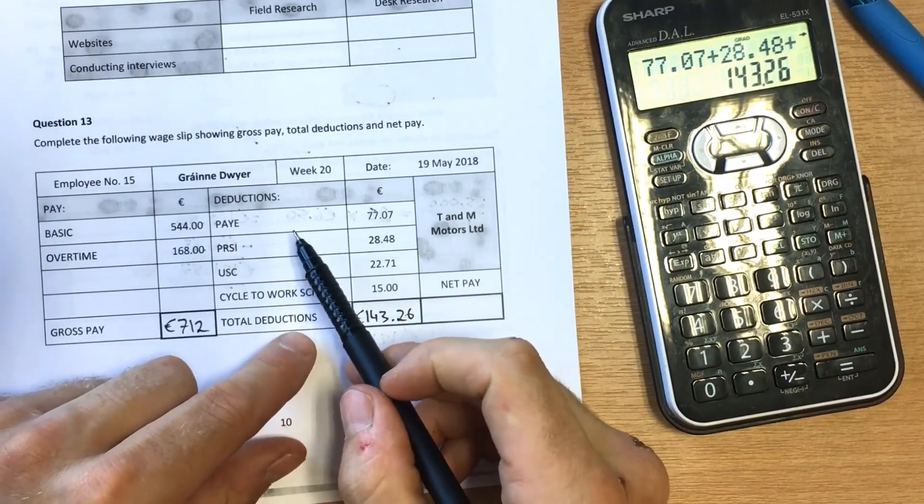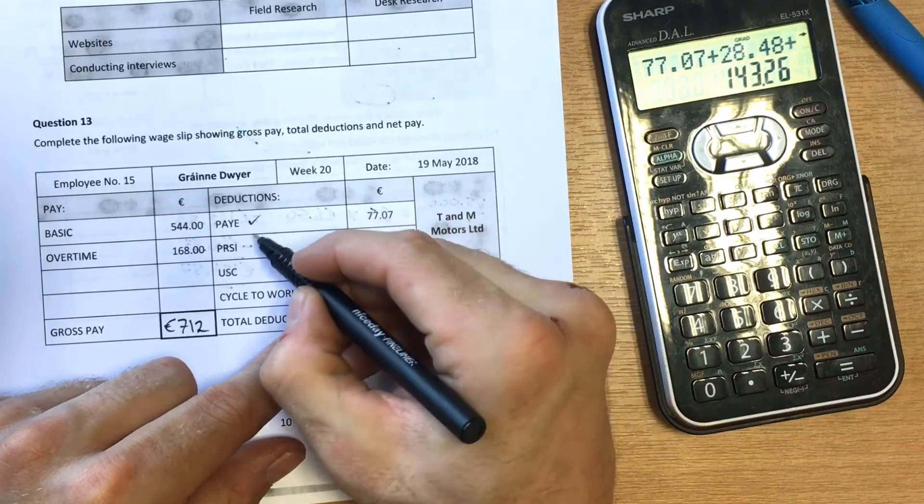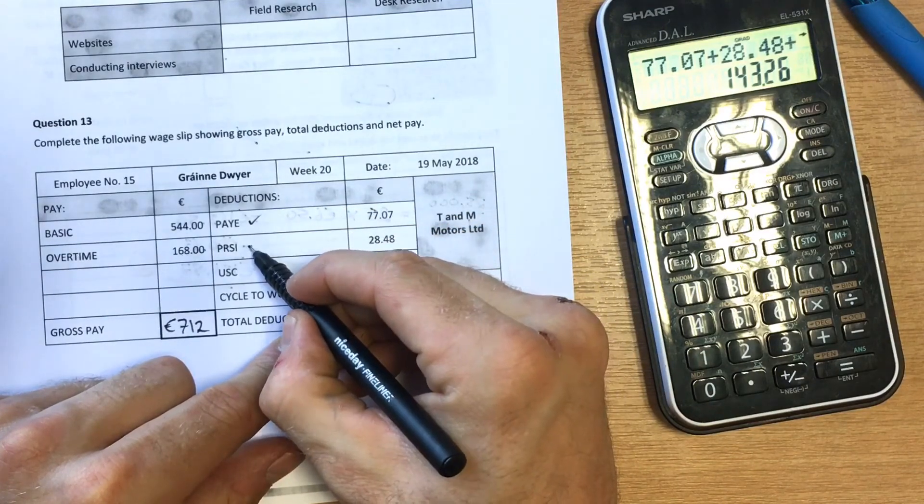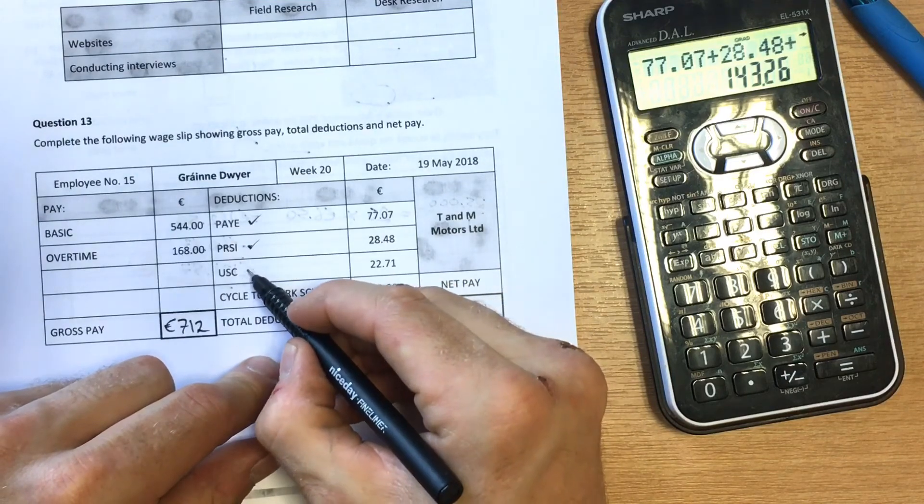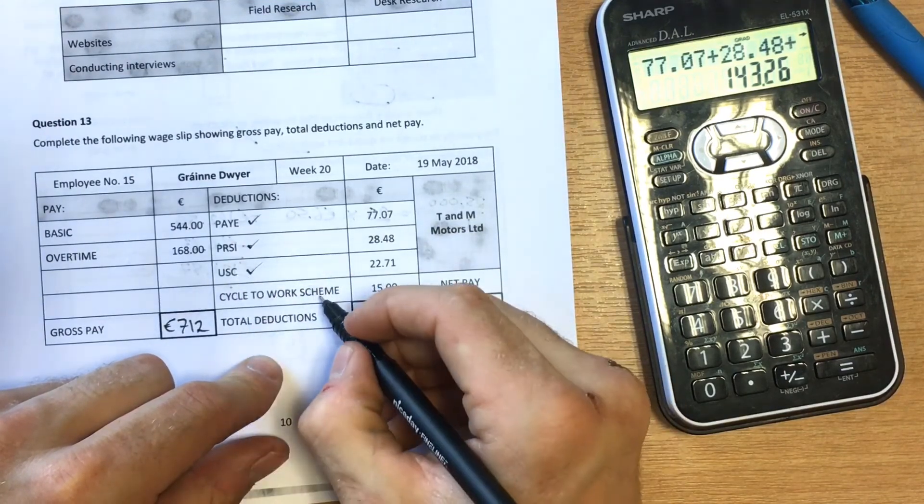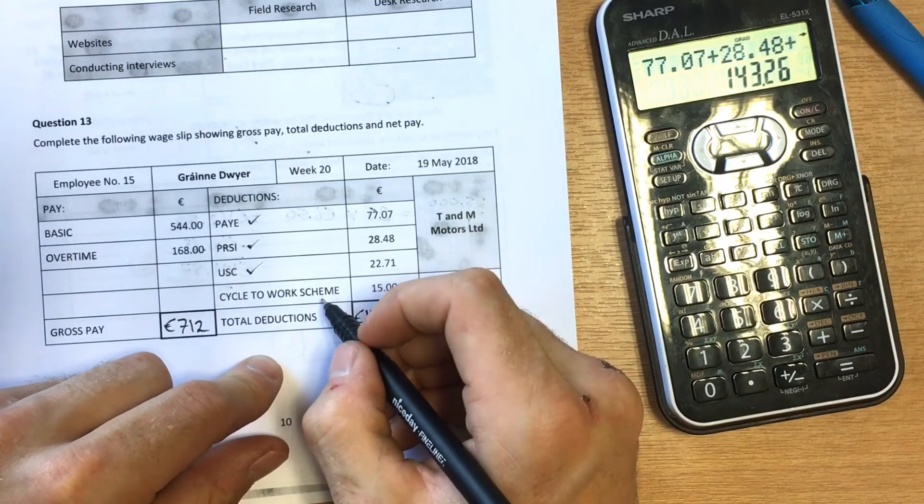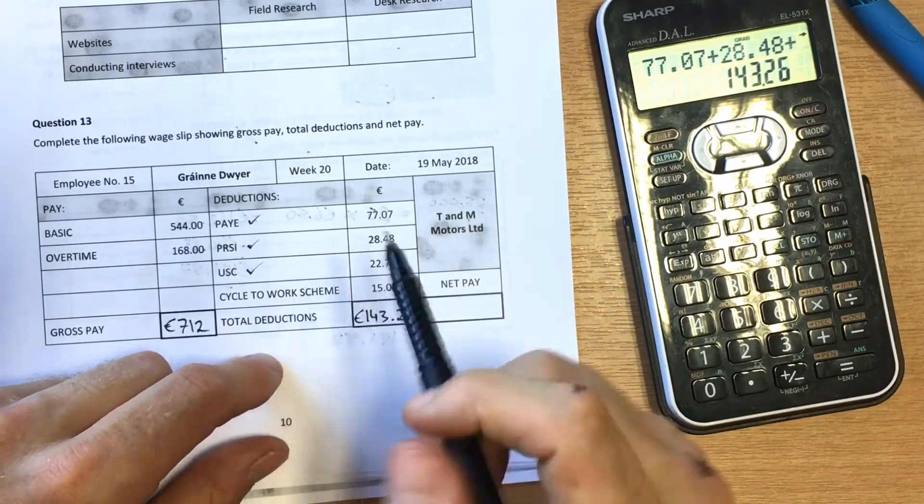Just to run through our deductions quickly, we can see we have statutory deduction PAYE (pay as you earn), statutory deduction PRSI (pay related social insurance), statutory deduction USC (universal social charge), and a non-statutory deduction: cycle to work scheme.